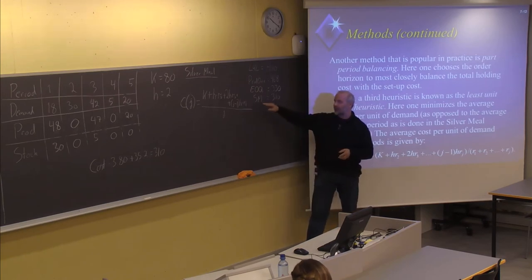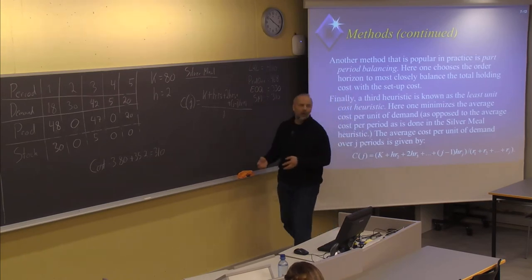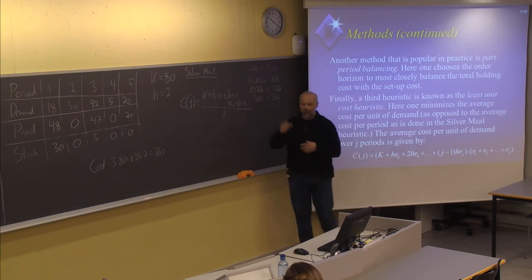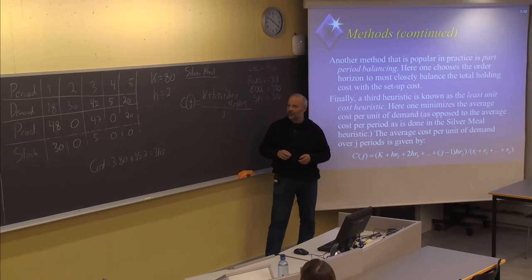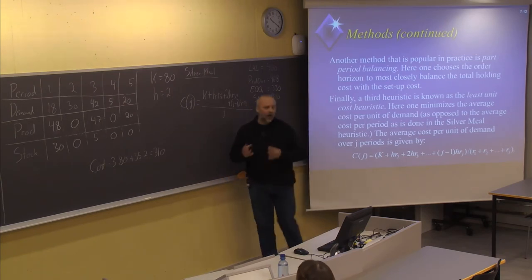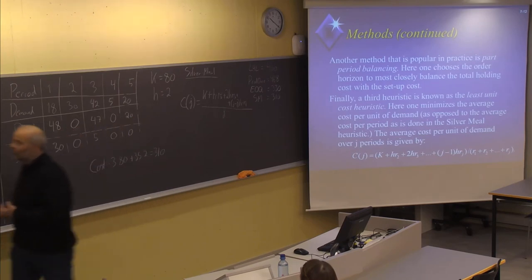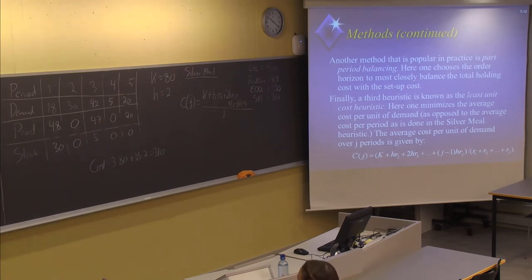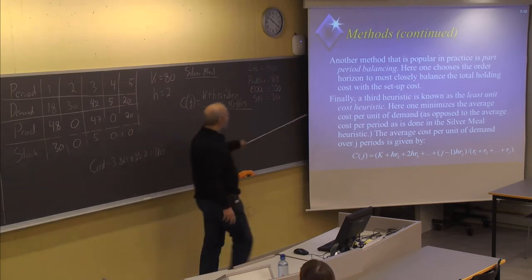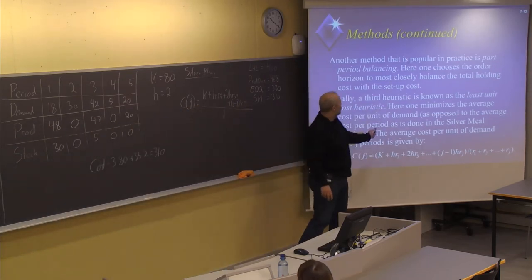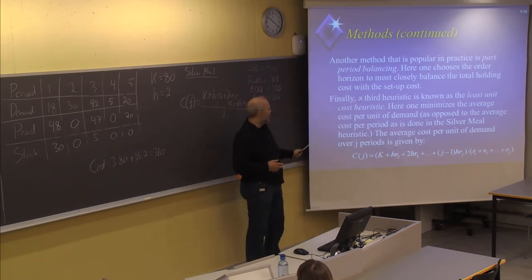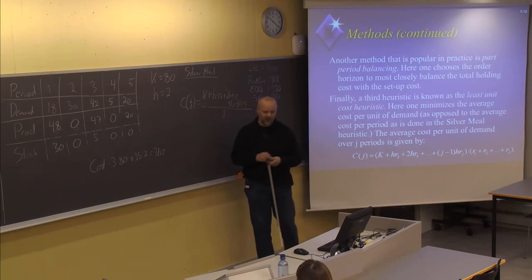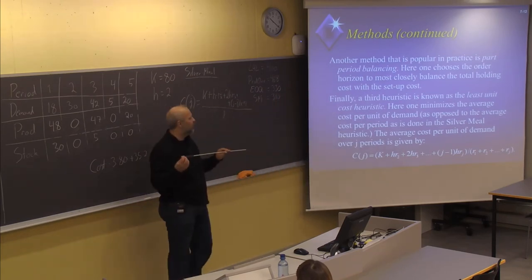We have seen the Silver Meal method, which was able to find a better solution than the others by looking at the average cost myopically — one period ahead every time — and finding where the average cost will be at the lowest. Now we will see one or two more heuristics. The first one is the Least Unit Cost (LUC), and then I will come back to Part Period Balancing after that. All three heuristics — Silver Meal, Least Unit Cost, and Part Period Balancing — are part of your assignment in problem number four.